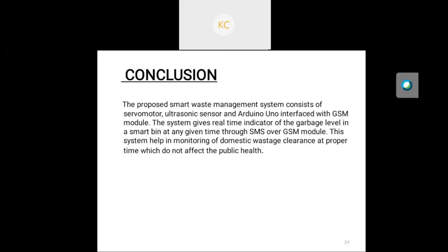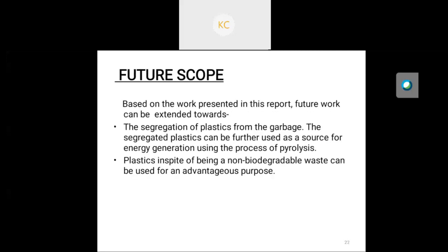The proposed smart waste management system consists of servo motor, ultrasonic sensor, and Arduino Uno interfaced with a GSM module. The system gives a real-time indicator of the garbage level in a smart bin at any given time through SMS via the GSM module. This system helps in monitoring domestic waste clearance at proper times, which does not affect public health.